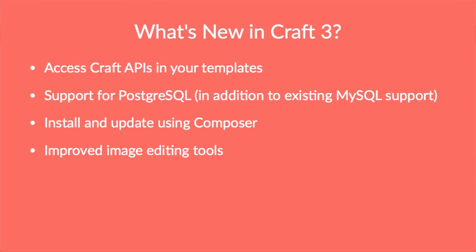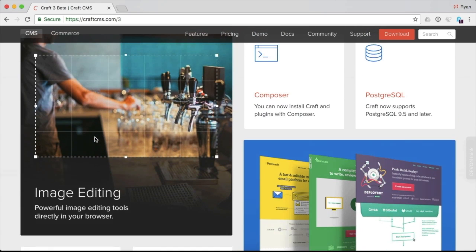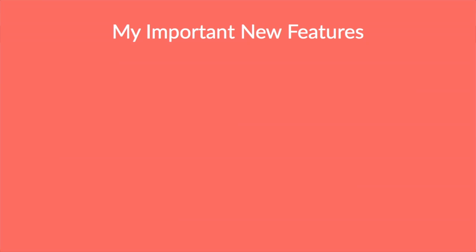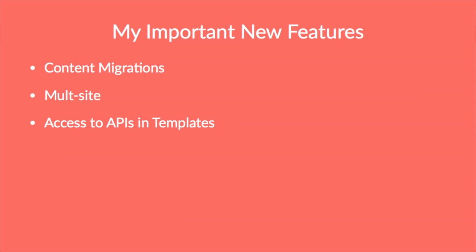Finally, there are some new image editing tools highlighted on the site where you can do a bit more with images. This is a nice-to-have feature, especially if you're building a site where content editors want to manipulate their images. So for me, the big changes are the content migrations, the multi-site support, access to service APIs in the templates, and Composer support. Those are the ones that are going to touch most people and be the most impactful day-to-day as you build sites with Craft 3.